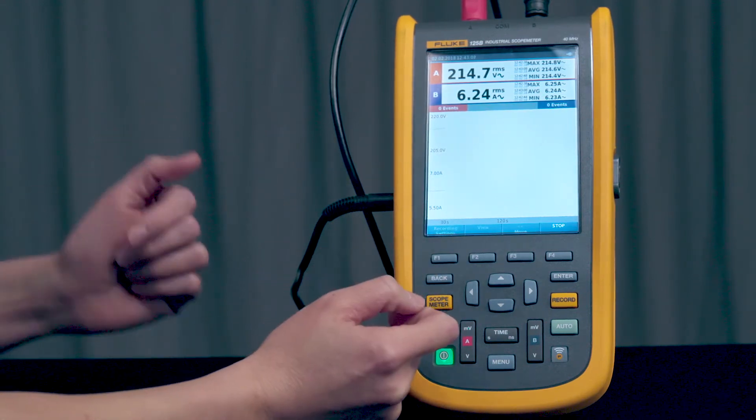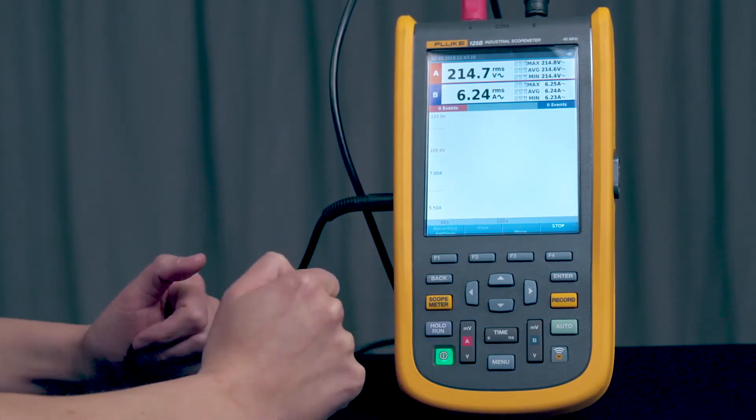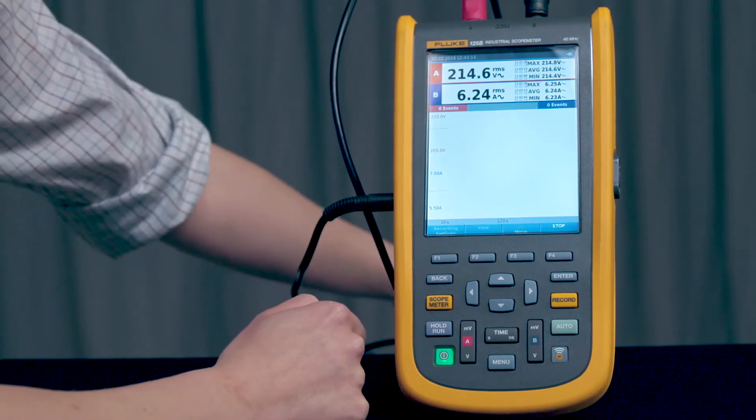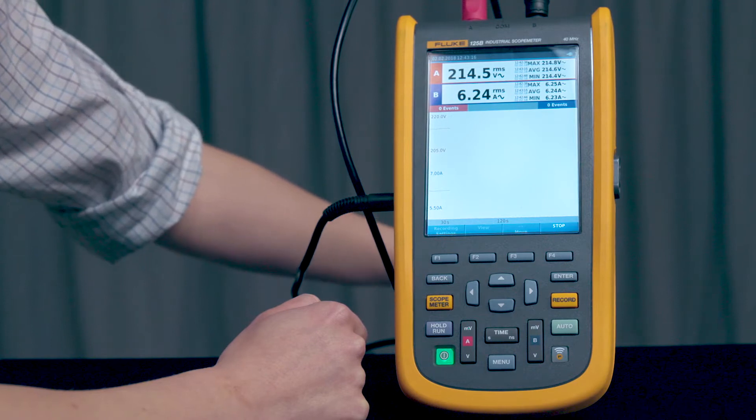Here is the number of event counts for both your channels. So let's create some events. That means we're going to take it beyond the plus minus 10% threshold. So let's do that first for the voltage.